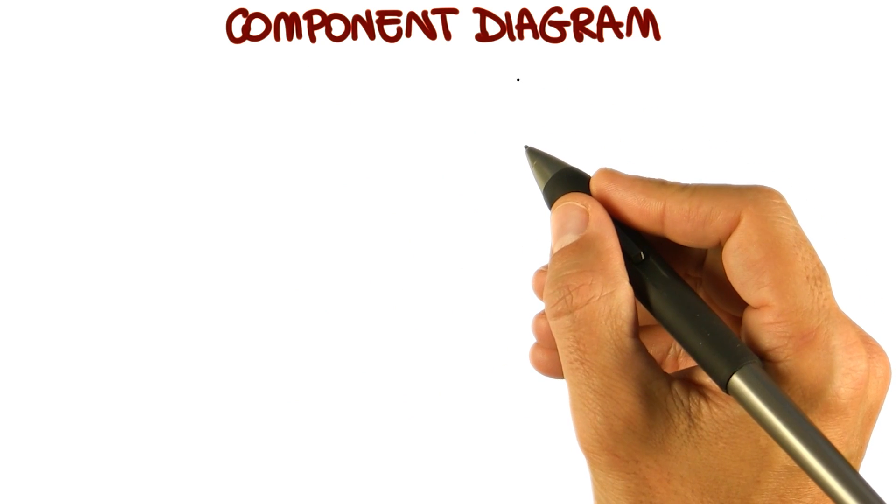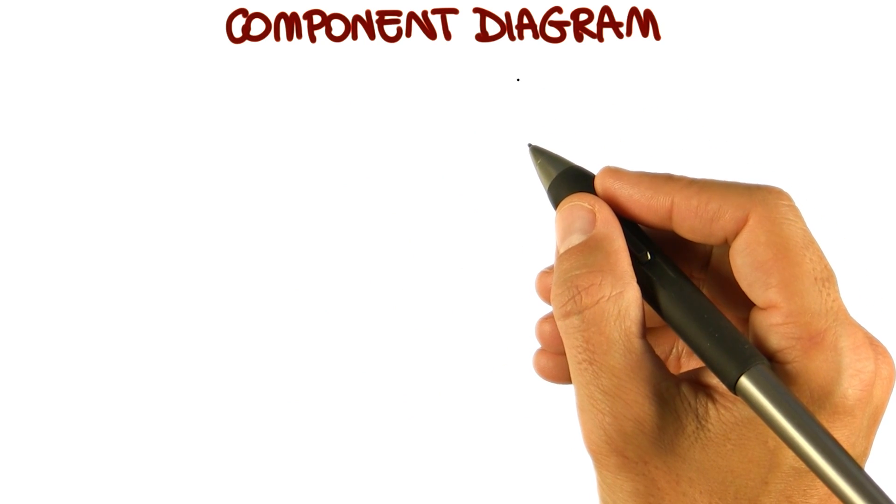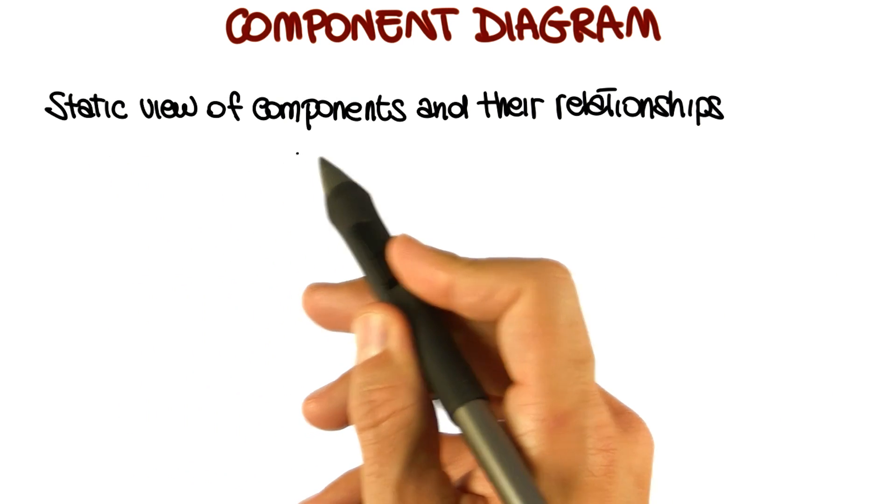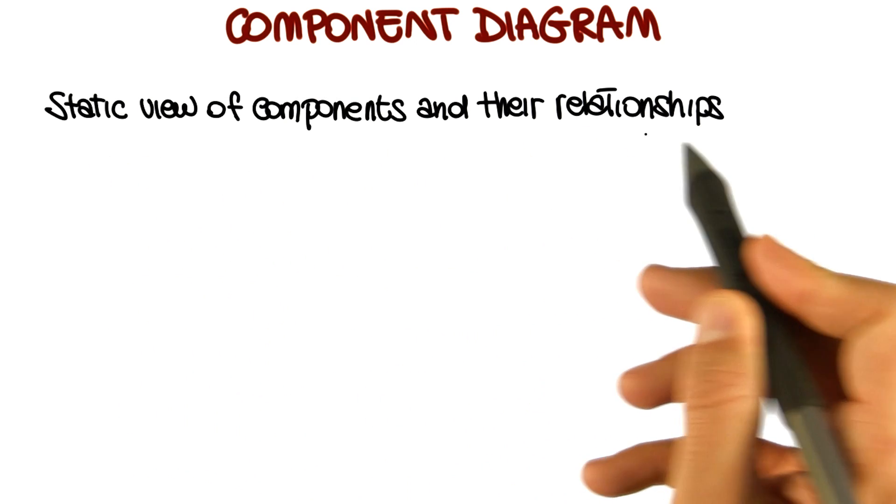There's two more structural diagrams that I want to mention before we move to the behavioral ones. The first one is the component diagram. A component diagram is a static view of the components in a system and of their relationships.